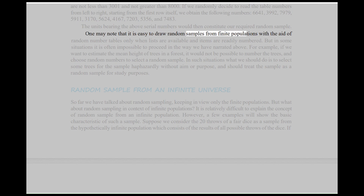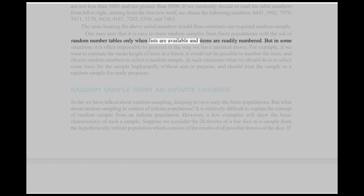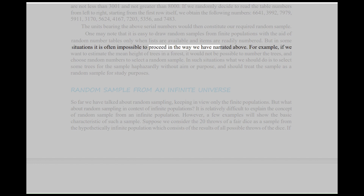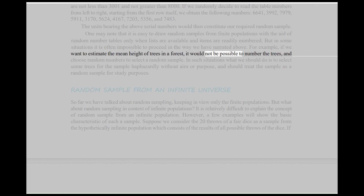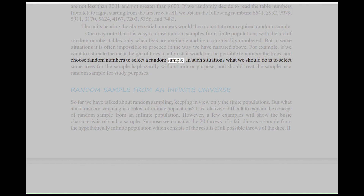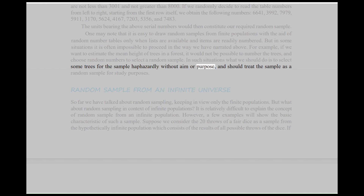One may note that it is easy to draw random samples from finite populations with the aid of random number tables only when lists are available and items are readily numbered. But in some situations, it is often impossible to proceed in this way. For example, if we want to estimate the mean height of trees in a forest, it would not be possible to number the trees and choose random numbers to select a random sample. In such situations, we should select some trees for the sample haphazardly without aim or purpose and treat the sample as a random sample for study purposes.